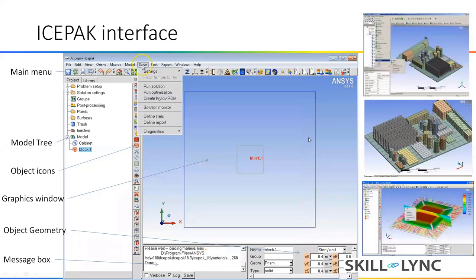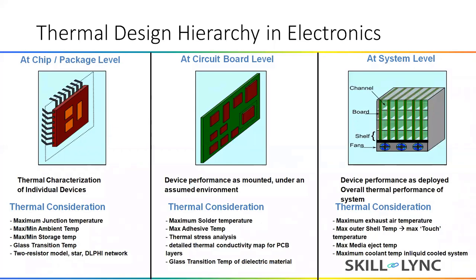I will take you through different levels of analysis called the thermal design hierarchy in electronics. At the chip level, we do a thermal characterization of the individual device. We have different criteria for thermal design — maximum junction temperature limits and minimum and maximum ambient temperature, because when you see the datasheet of any chip, it specifies that the operating limits are, for example, from minus 20 to plus 40. We do both the min and max temperature simulations, including storage temperature transient simulations over a period of time at different temperature levels.